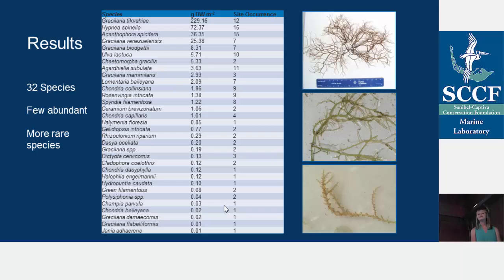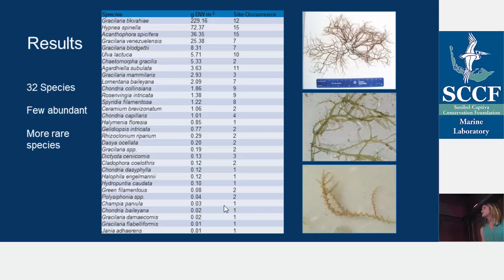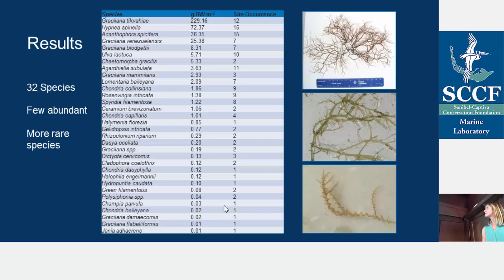Going into the species results of these trawls, from this table you can see all the species we found — a total of 32. A few were dominant. At the top is Gracilaria tikvahiae, found at 12 sites with 229 grams dry weight per meter squared total — that top picture is Gracilaria tikvahiae. Next most abundant was Hypnea spinella — that's the middle one. And then Acanthophora spicifera, which is the bottom one with those little spikes that allow it to cling to things.